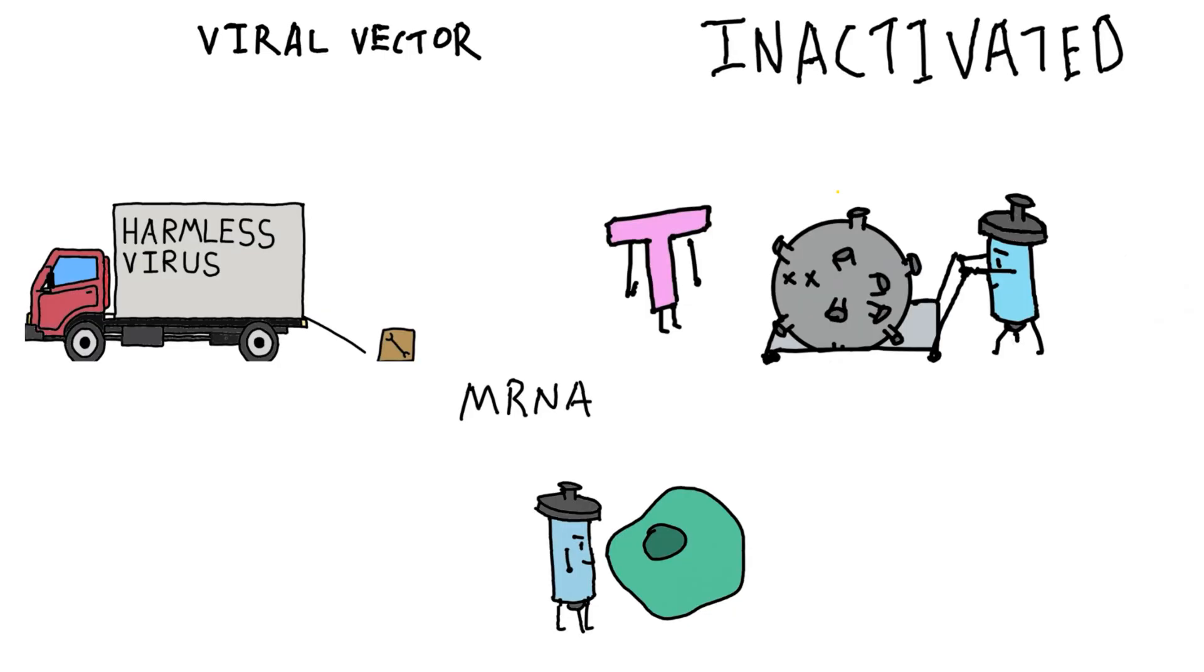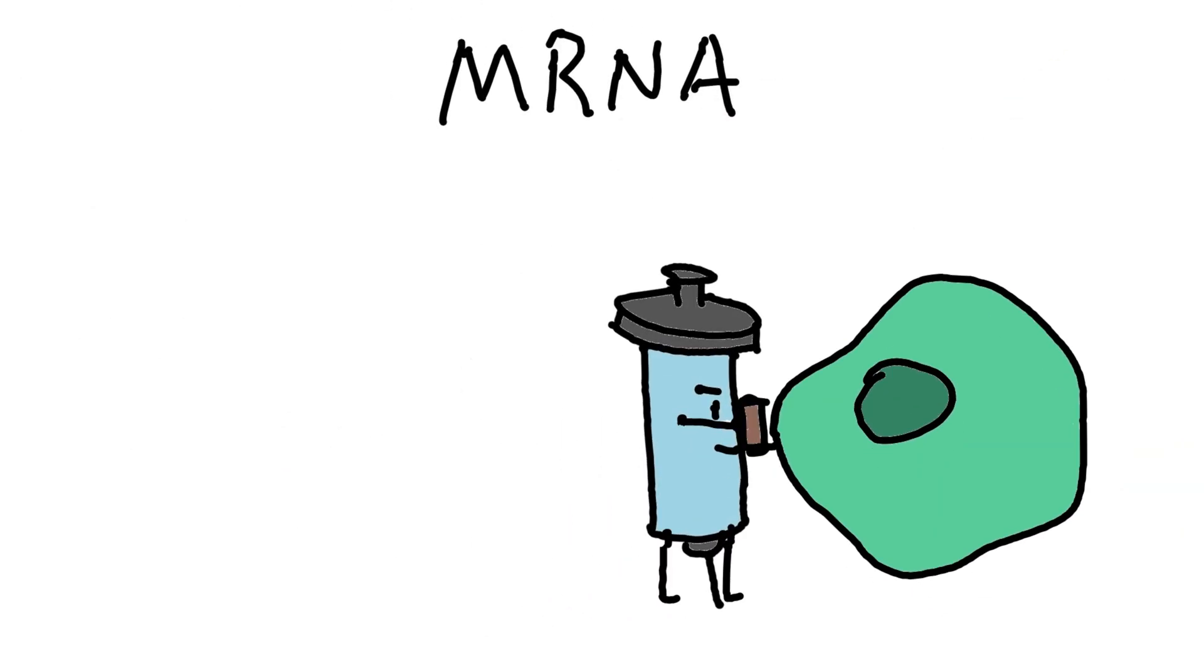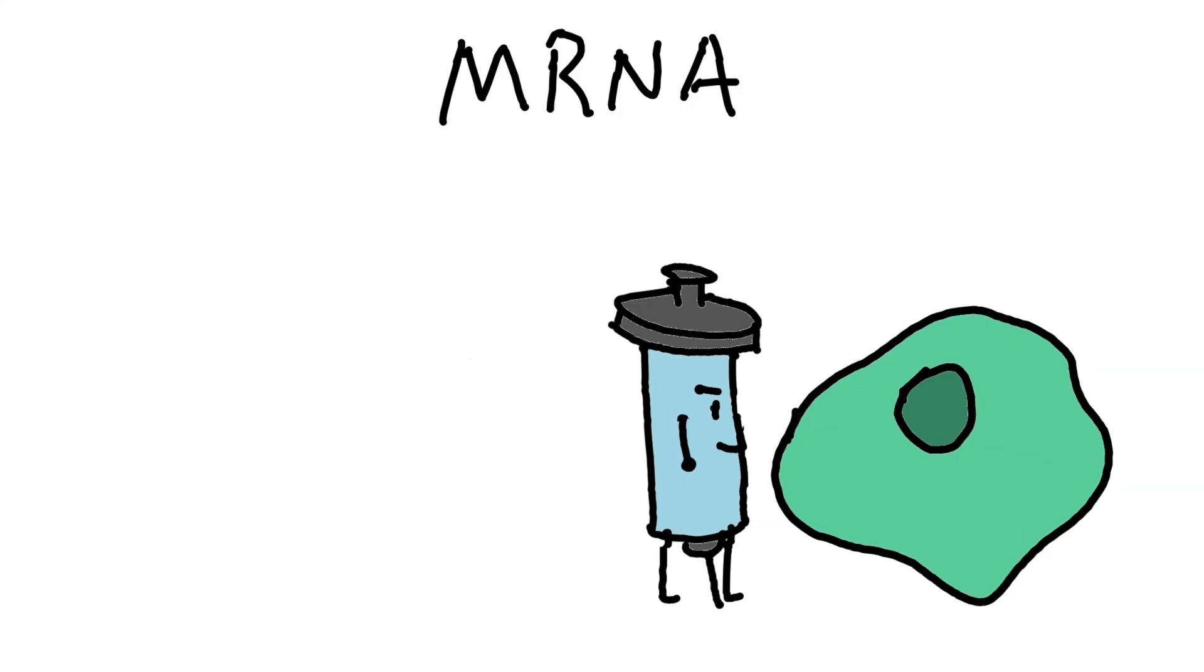But not all vaccines work in the same way. In fact, there are a few different types, each training your immune system in a slightly different way. First, mRNA vaccines give your cells instructions to make a harmless piece of the virus, called the spike protein. Your immune system learns to fight it and remembers it for the next time.